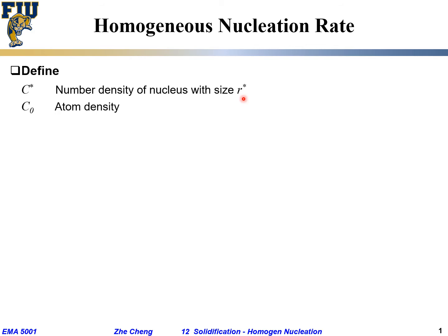Another term, C0, is the atomic density, with units of number of atoms per unit volume. It is the same for the liquid phase as well as the solid phase, because for simplicity we have assumed that the molar volume remains the same from liquid to solid during the solidification process.